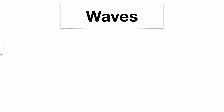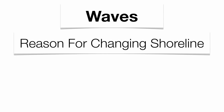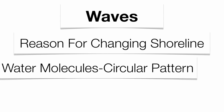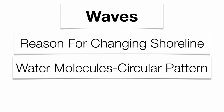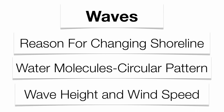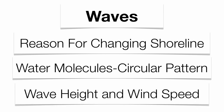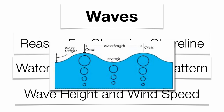Waves themselves are important because they're the main reason for the changing shoreline. Waves are going to be created by the circular pattern of the water molecules. The bigger the circular pattern, the bigger the wave is going to be — and essentially that's going to be associated with wind speed. There's your circular pattern of your water molecules creating your waves.